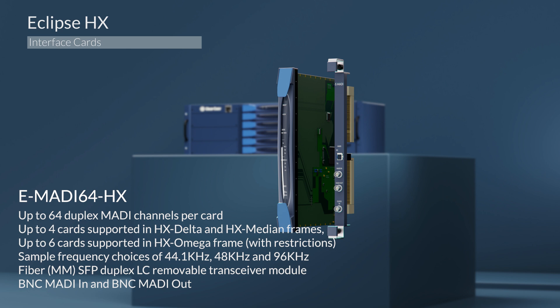MADI channels are used for high-capacity matrix linking or audio distribution. The word clock can be derived either from SD, NTSC, or PAL video, along with tri-level HD or an AES word clock. It also includes a removable SFB duplex LC transceiver module. The fiber interface system can distribute the MADI channels over a large venue or stadium to other users or matrix frames. In addition to the fiber connection, BNC coaxial input and output connections are provided. The MADI card also features Vox on all 64 inputs.